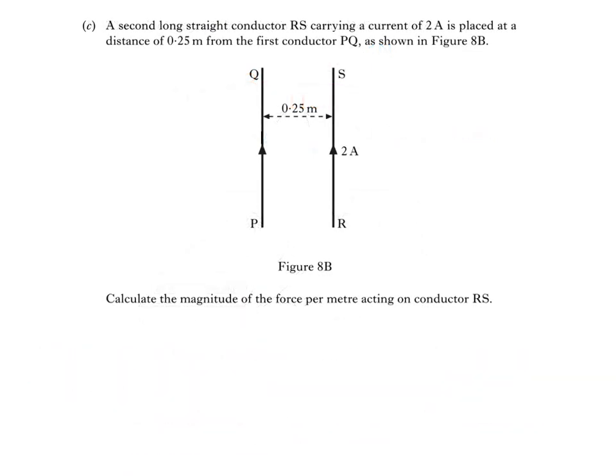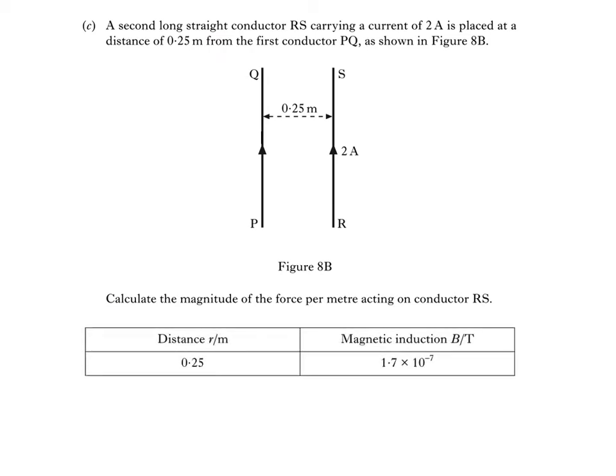This is part C of the question. There's some debate whether this type of question would come up in a CFE Advanced Higher paper, but I've included it because the physics is fairly straightforward, and we can use the same equations as in parts A and B, which you'll find in the CFE relationship sheet. This is the table we saw earlier, which tells us that the magnetic induction at a distance of 0.25 metres from the conductor PQ is 1.7 times 10 to the negative 7 Tesla. This is also the distance between conductor PQ and conductor RS.